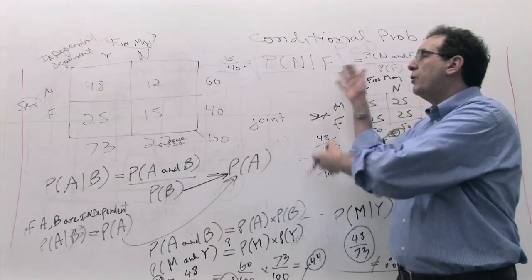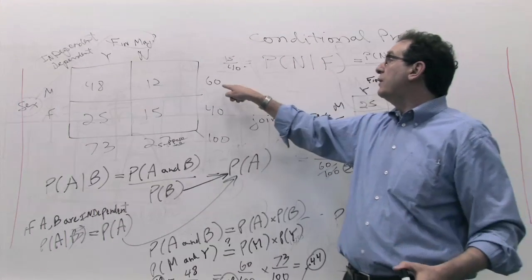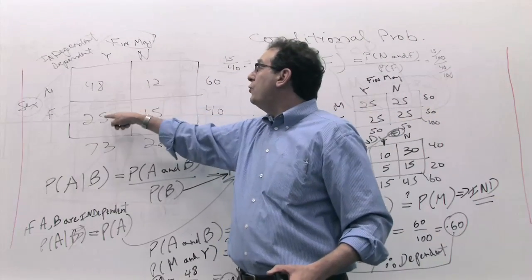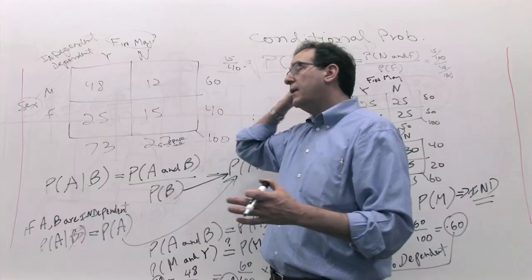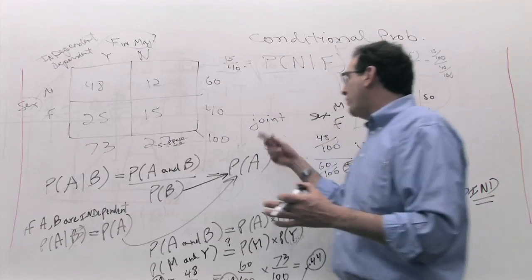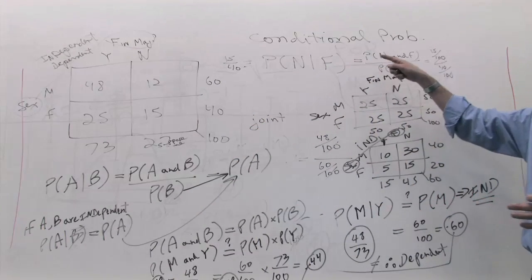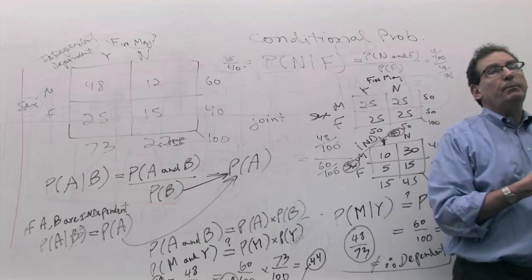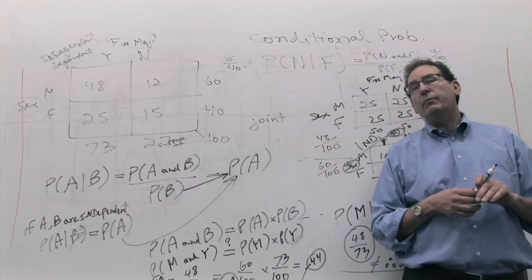But after all is said and done, you start out with a chart, and all the problems of the chapter are either asking you to find the simple probability, the joint probability, the union of two events, or the conditional probability, and finally using the conditional probability to prove that two variables are independent. That's everything you need to know out of chapter four.